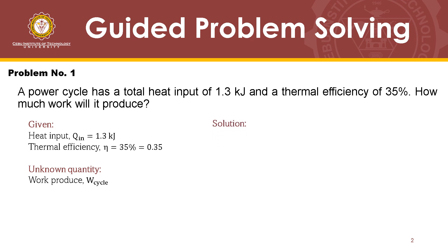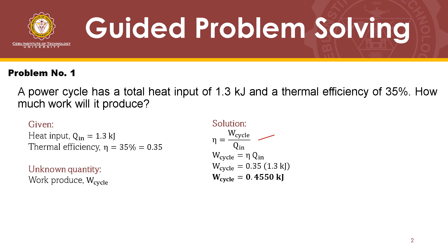The solution is to find a quantity that relates the given as well as the unknown quantity, and that is our equation for thermal efficiency: work cycle divided by the heat input. Rearranging, we get thermal efficiency times heat input equals work cycle. Plugging in the values, the work produced is 0.45 kJ. So the power cycle will produce 0.45 kJ of work.